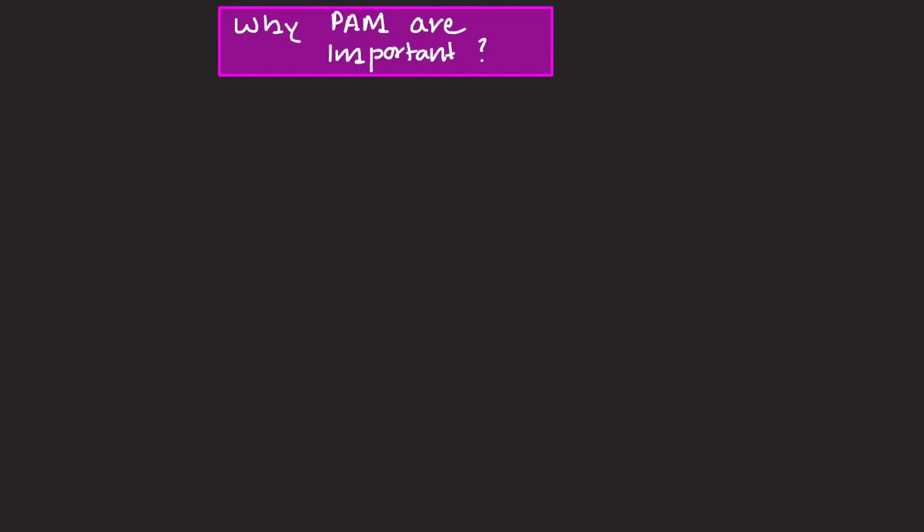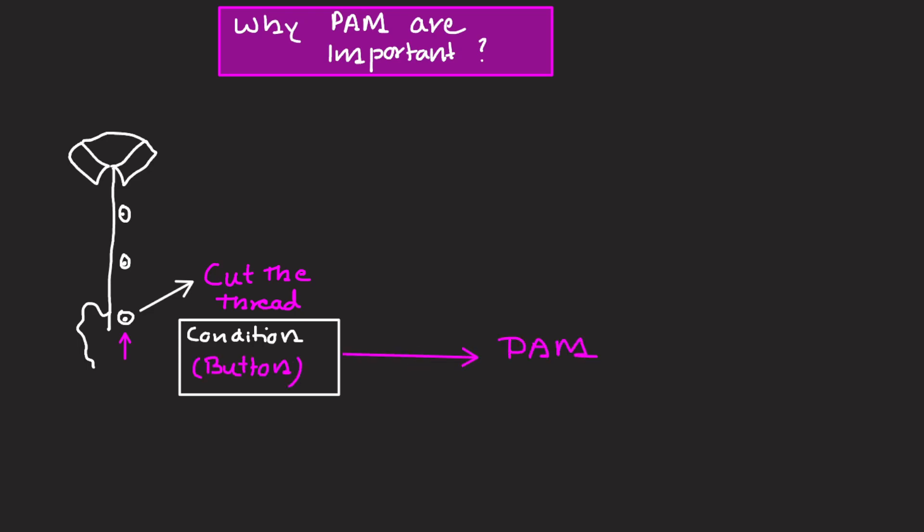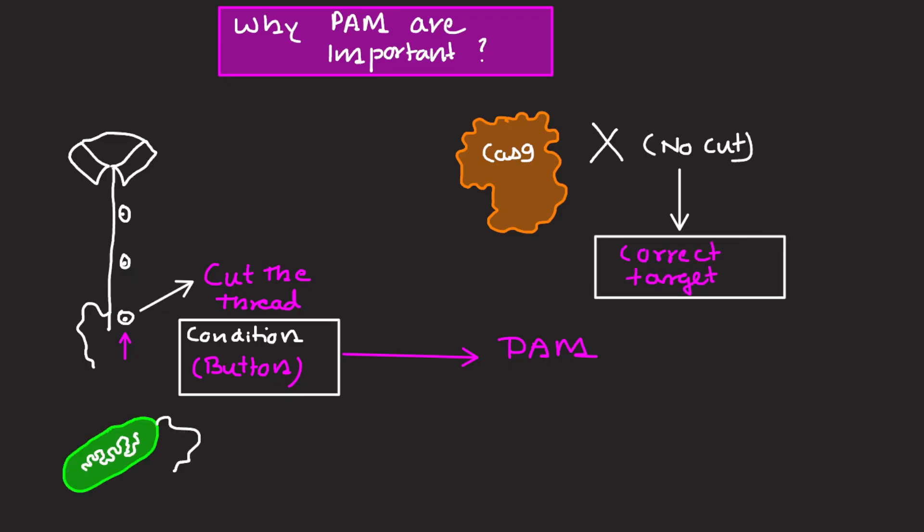Now let's understand why PAM is important. Let's say you are trying to cut a thread in a shirt, but only if there is a button nearby. The button is your PAM. Without it, Cas9 won't act even if the target thread is correct. This is how bacteria avoid cutting its own CRISPR regions, because their stored sequences don't have PAM nearby.